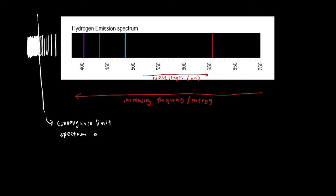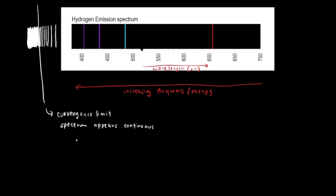At the convergence limit, the spectrum appears continuous. Notably, the convergence limit corresponds to the ionization energy of the hydrogen atom — the removal of an electron to turn an atom into an ion. In the hydrogen emission spectrum, the convergence limit involves the n=infinity level, where the electron has so much energy it can overcome the attraction between itself and the nucleus, leaving the atom entirely and turning it into an ion.